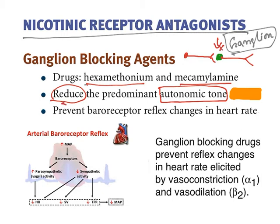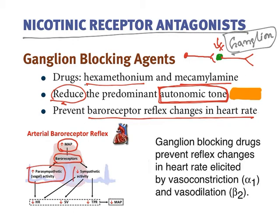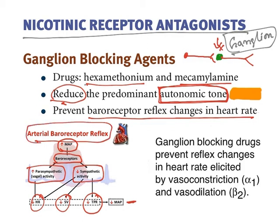These drugs are not clinically used because they have variable effects. The major effect is that they prevent the baroreceptor reflex change in heart rate. Baroreceptors present on the aorta sense blood pressure; if mean arterial blood pressure increases, baroreceptors are activated, increasing parasympathetic tone and reducing sympathetic tone, which reduces heart rate, stroke volume, and total peripheral resistance — thereby reducing mean arterial blood pressure. Ganglionic blockers prevent this reflex, and because of their varied effects they are not widely used clinically.